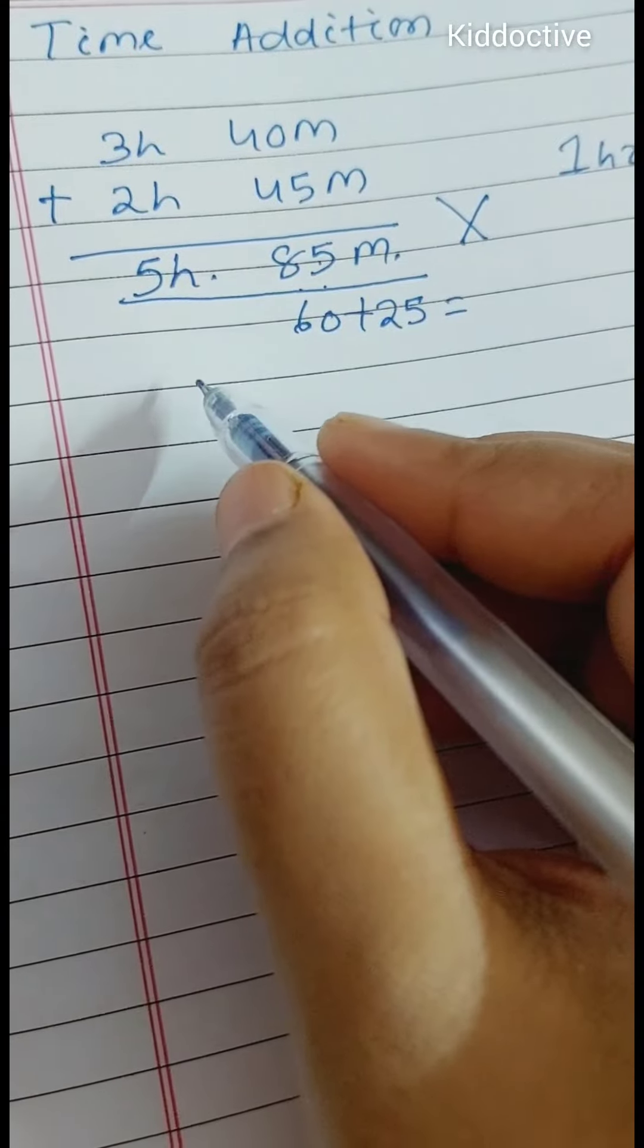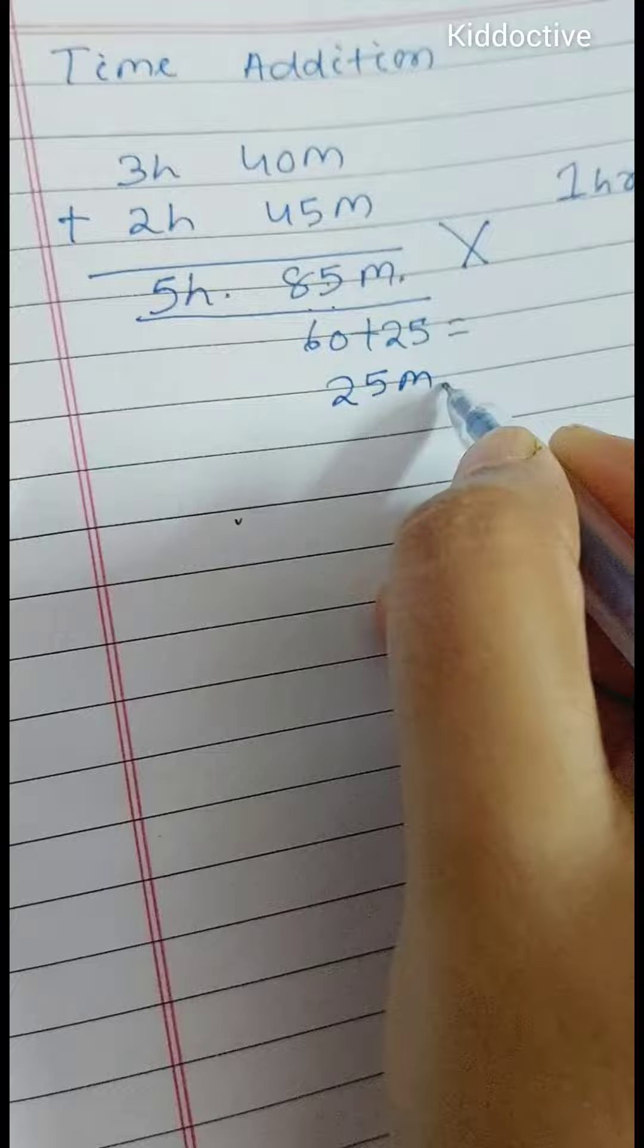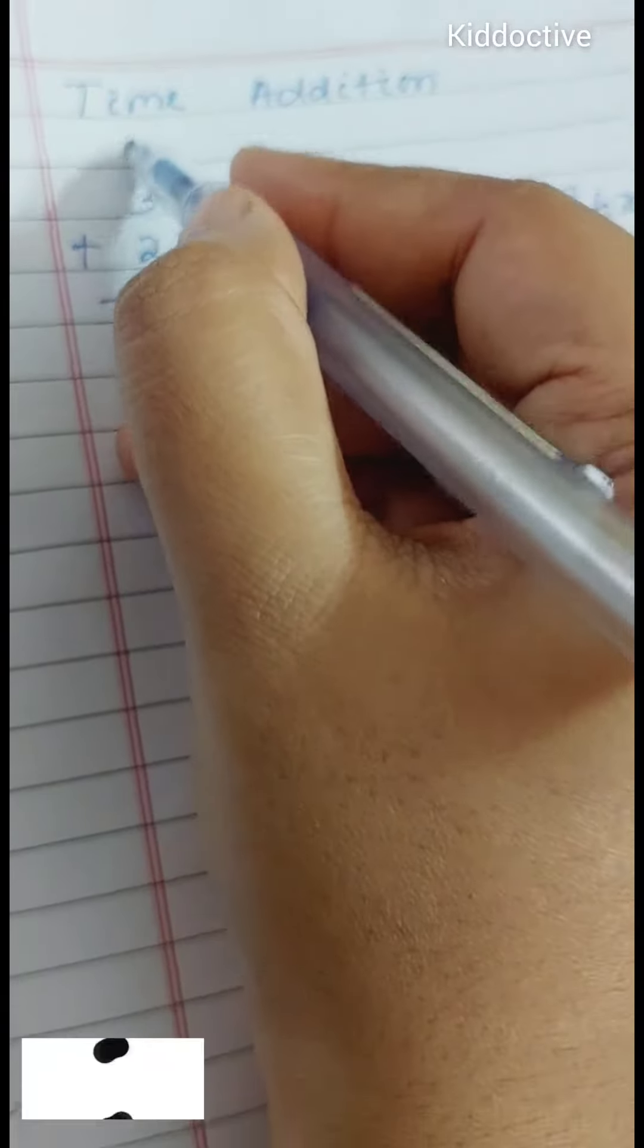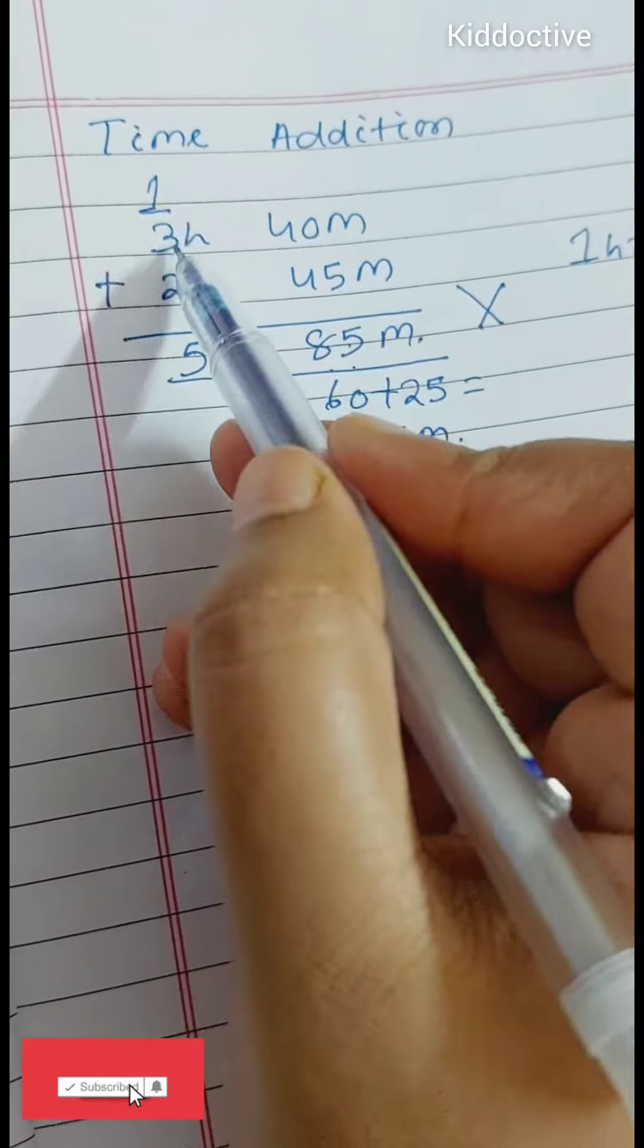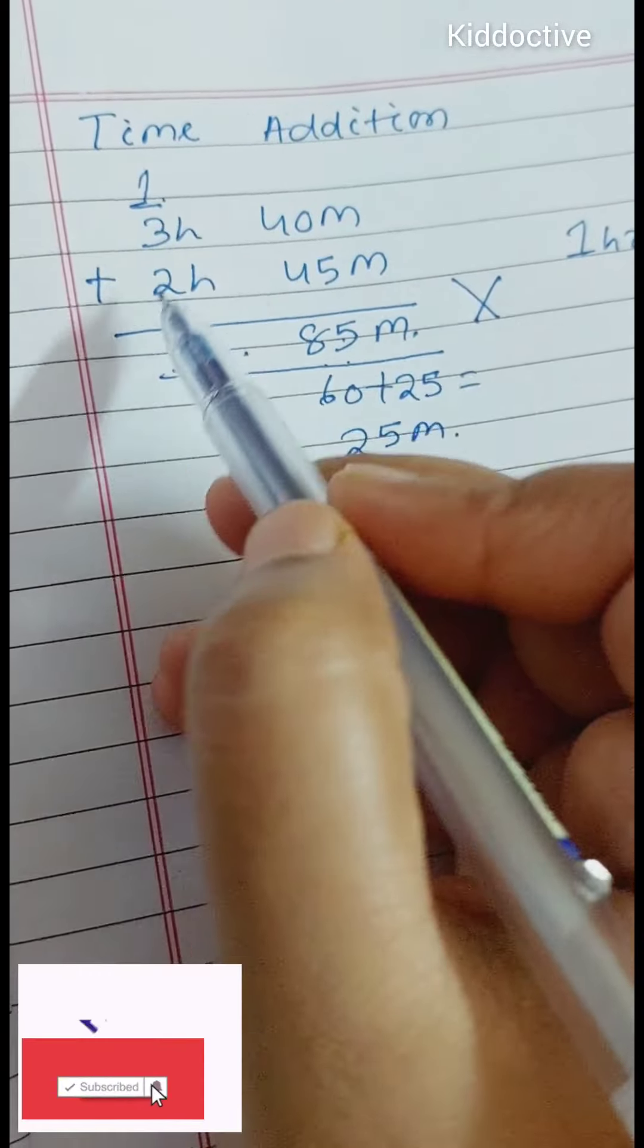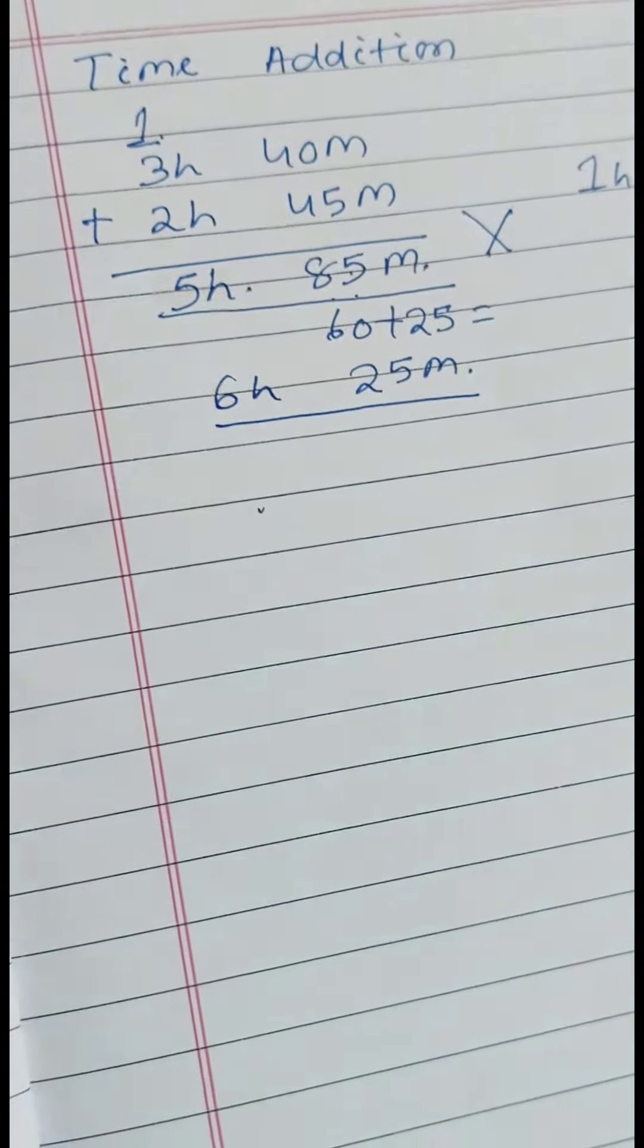The actual answer is we are going to write here 25 minutes and we will add carry forward 1 hour here. So 3 plus 1 is 4, 4 plus 2 is 6. 6 hours 25 minutes. Thank you for watching.